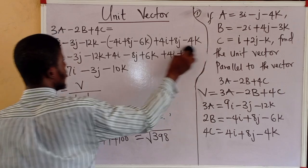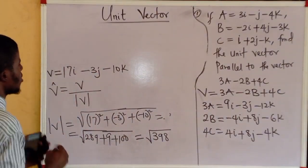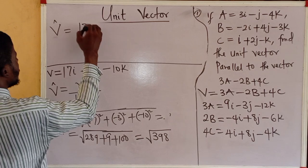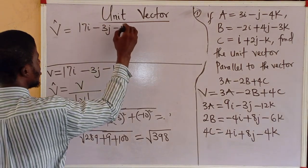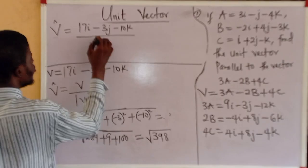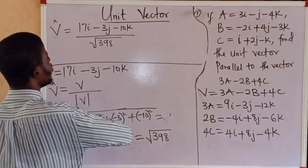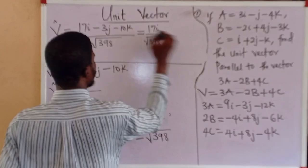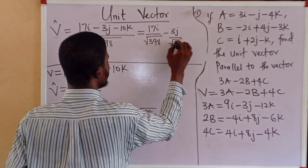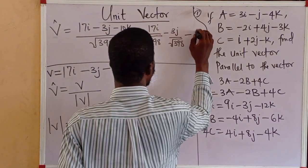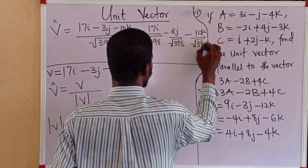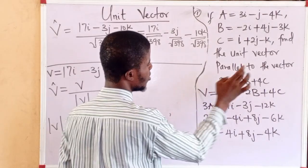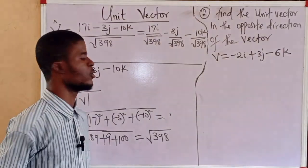The unit vector in the same direction as V is the vector itself over the modulus: 17i minus 3j minus 10k, all divided by root 398. We can write this as 17i over root 398, minus 3j over root 398, minus 10k over root 398. This is the unit vector parallel to the given vector.